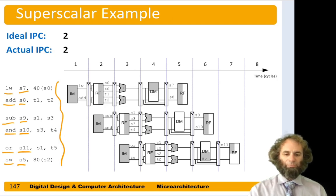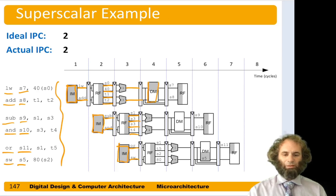On the first cycle we could fetch both the load and the add from instruction memory. On the second cycle we read s0 and 40 for the load, t1 and t2 for the add, and meanwhile fetch the subtract and the and. On the third cycle the load and add could both do addition, and t1 and t2 for the subtract and and. On the fourth cycle the load uses data memory, the add doesn't need it, the ALU is doing a subtract and an and, and the register file is reading operands for the or and store.